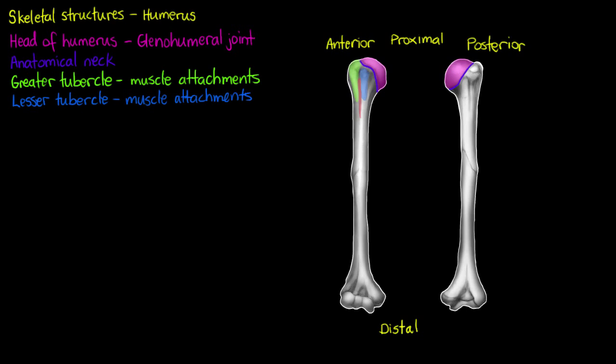Between those two tubercles we have a structure known as the intertubercular sulcus or intertubercular groove. It's going to be a point where the long head of our biceps brachii muscle or where that tendon can slide through and it won't dislodge from that area. The tendon of the biceps brachii or the long head is going to go through that groove or sulcus there.